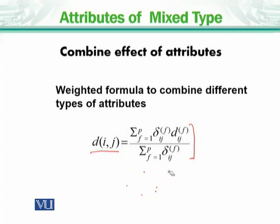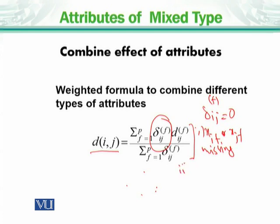What happens if some values are missing? If some values are missing, then what do we do? Let's say that we have this parameter, partial derivative or partial distance. In this case, we are seeing that delta ijf is equal to zero. If number one, xif and xjf, in this case, there is no missing one. There is no missing one.